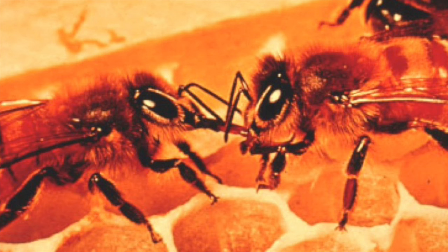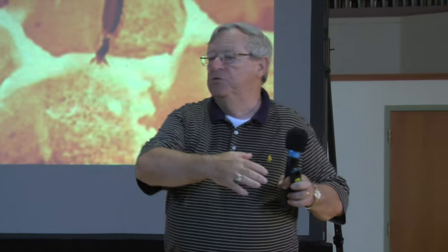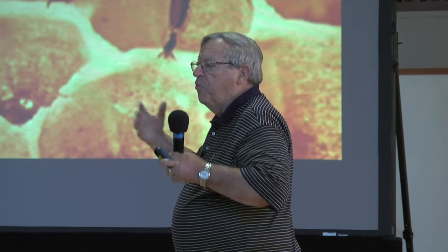When a field bee returns with a full load of nectar, she begins to disperse her load to various house bees. She doesn't just put it into a cell — she comes in and gives one droplet to this house bee, another droplet to that house bee, dispensing her whole load in the form of droplets to numerous bees. These are house bees, and this is where the ripening process will begin.